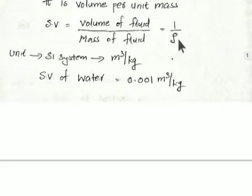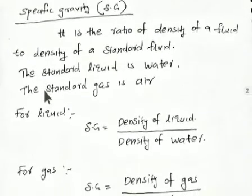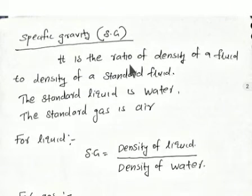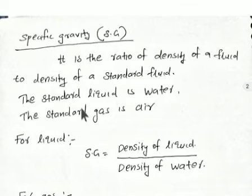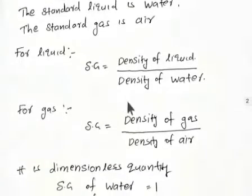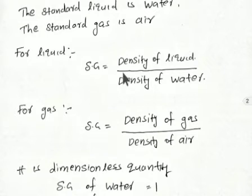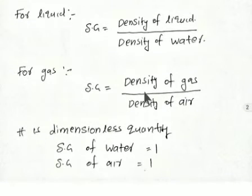So specific volume is also not a constant value. Specific gravity is the ratio of the density of a fluid to the density of a standard fluid. For liquids, the standard fluid is water; for gases, the standard fluid is air. For liquids, specific gravity equals density of liquid divided by density of water. For example, specific gravity of oil equals density of oil divided by density of water.